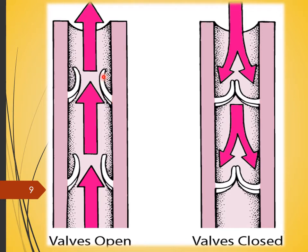Veins, on the other hand, do have valves inside them. These valves are known as semilunar valves. They are so named because they have a half-moon-like structure. These valves can be seen in open and closed positions. The function of these valves is to allow blood to move forward but to close and prevent backflow — if blood tries to flow backward, these valves shut.